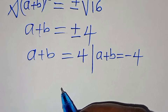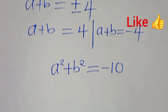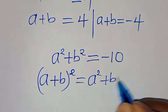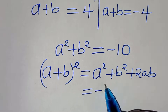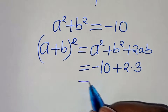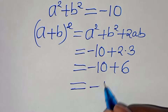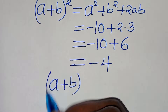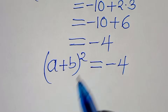Now using a squared plus b squared equals minus 10: (a plus b) squared equals a squared plus b squared plus 2ab. Substituting gives minus 10 plus 2 times 3, which is minus 10 plus 6, giving minus 4. So (a plus b) squared equals minus 4.